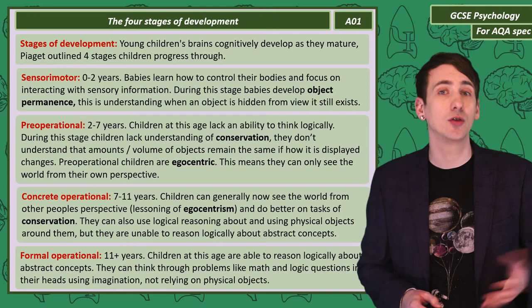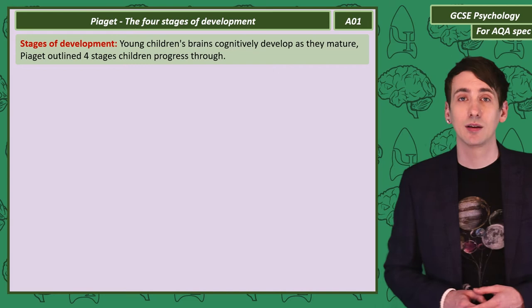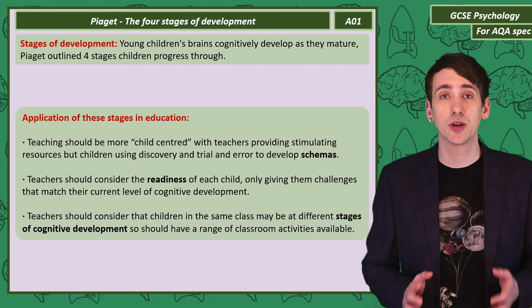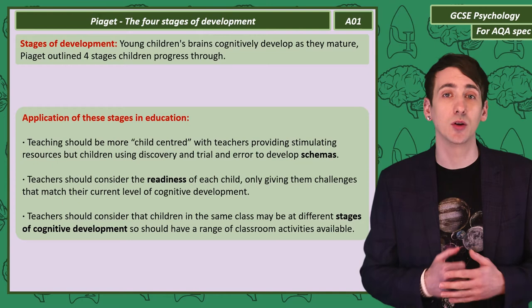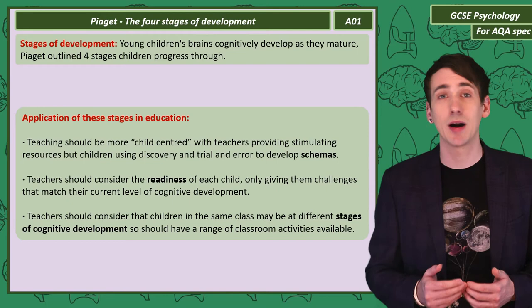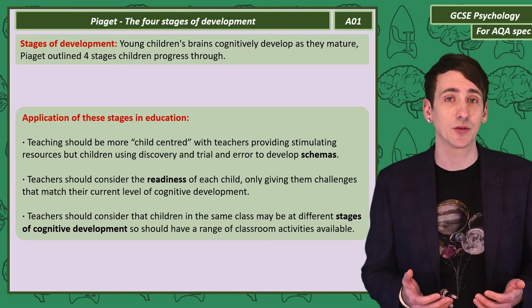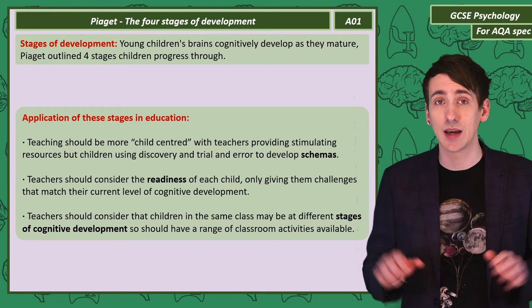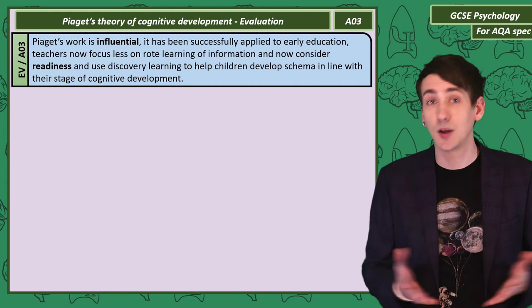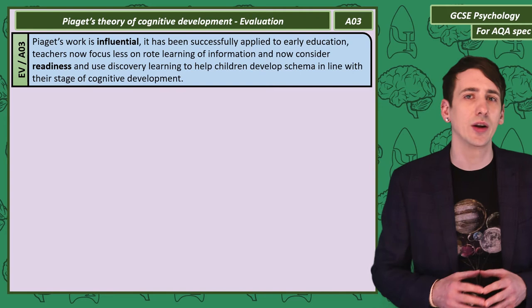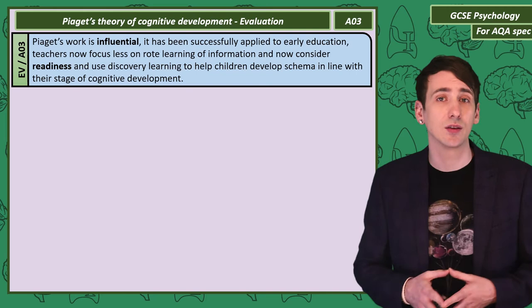We need to be able to consider how those stages can be applied to education. As young children are developing schema, the teaching in primary schools should be child-centred, with teachers providing interesting resources and experiences, so that children can develop their own schema through play, discovery and trial and error. As children are passing through stages and might be incapable of some tasks, teachers should consider a child's readiness for certain classroom challenges. Teachers could also keep in mind that children in the same class might be at different stages of cognitive development, so there should be a range of appropriate classroom activities available.